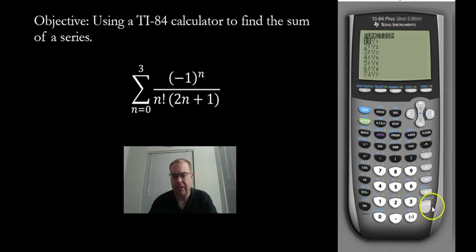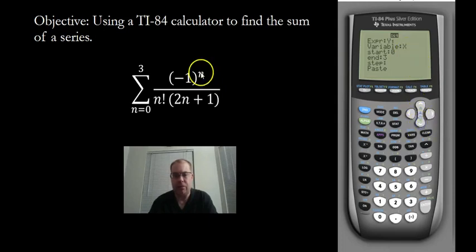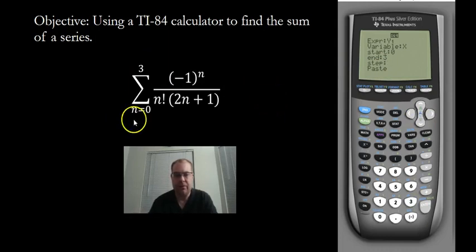Just hit Enter. The variable is x — we can use any letter you want, in this case I used x. This is for a finite series, going from zero as the starting point. The ending point is 3. Then we're going to paste that. You don't want to mess with the step size — it's already defaulted to step by integer value.